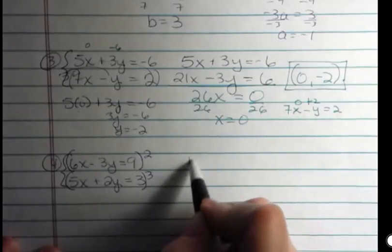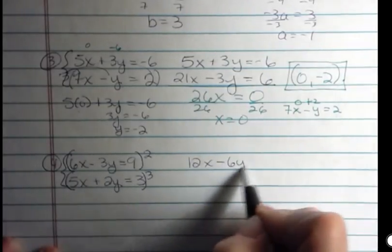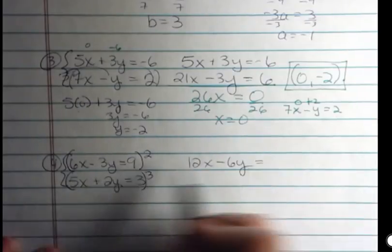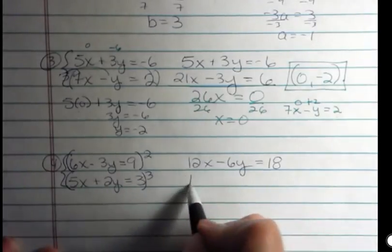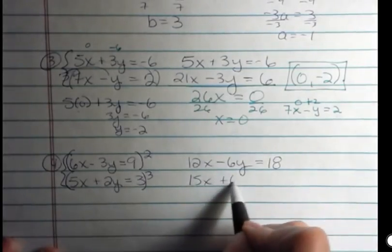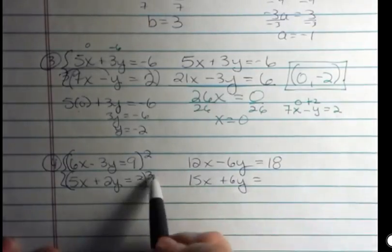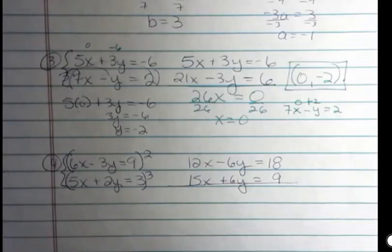6x times 2 is 12x. 3y times 2 is 6y, but I had a minus there so it's minus 6y. And 9 times 2 is 18. And then I have 5x times 3 which is 15x. 2y times 3 is 6y. That one was positive. And 3 times 3 is 9. And now I do have something that's going to be eliminated.